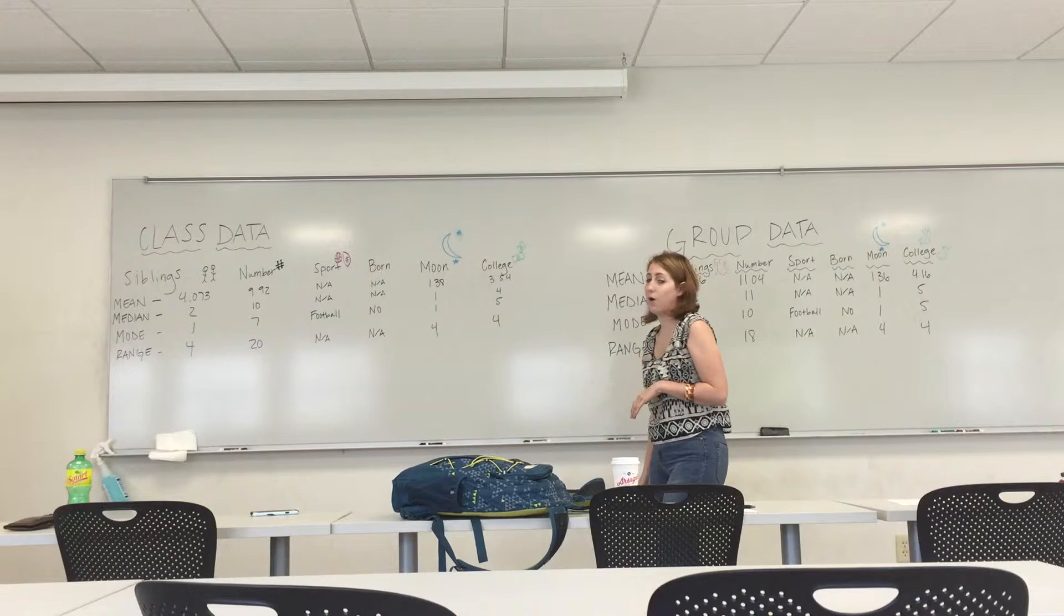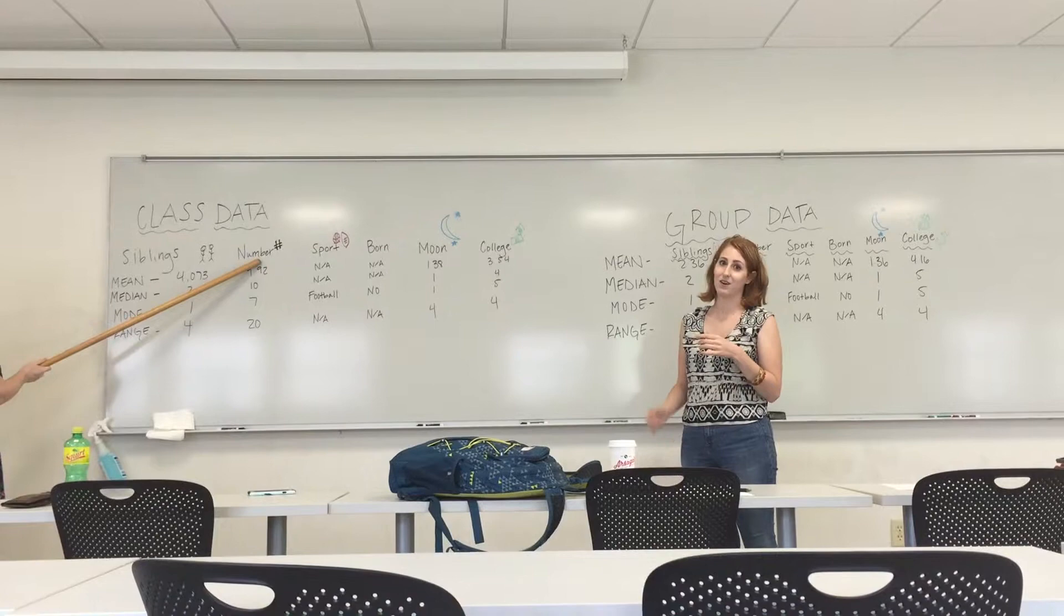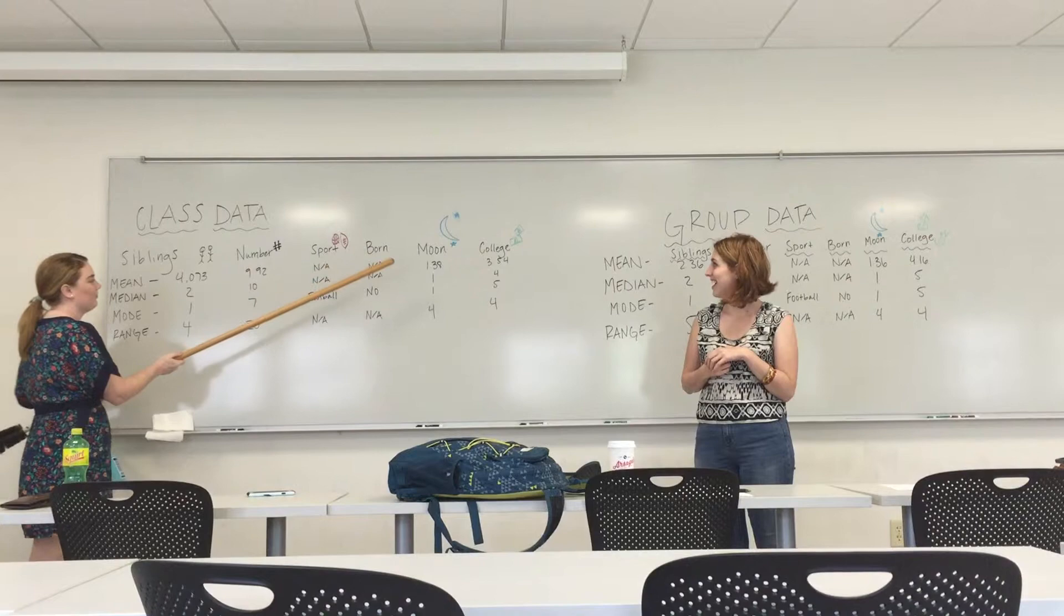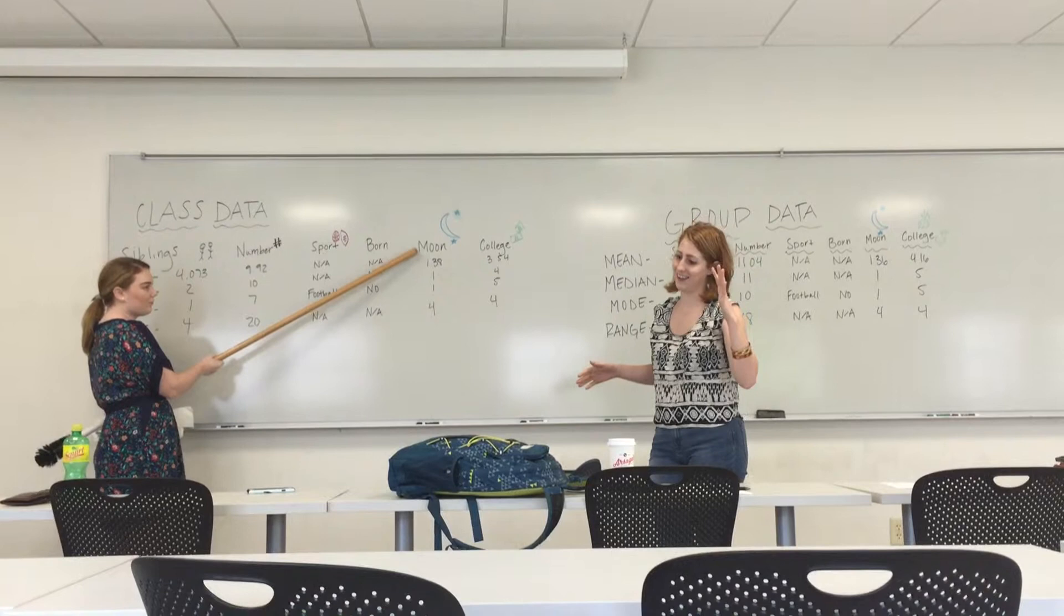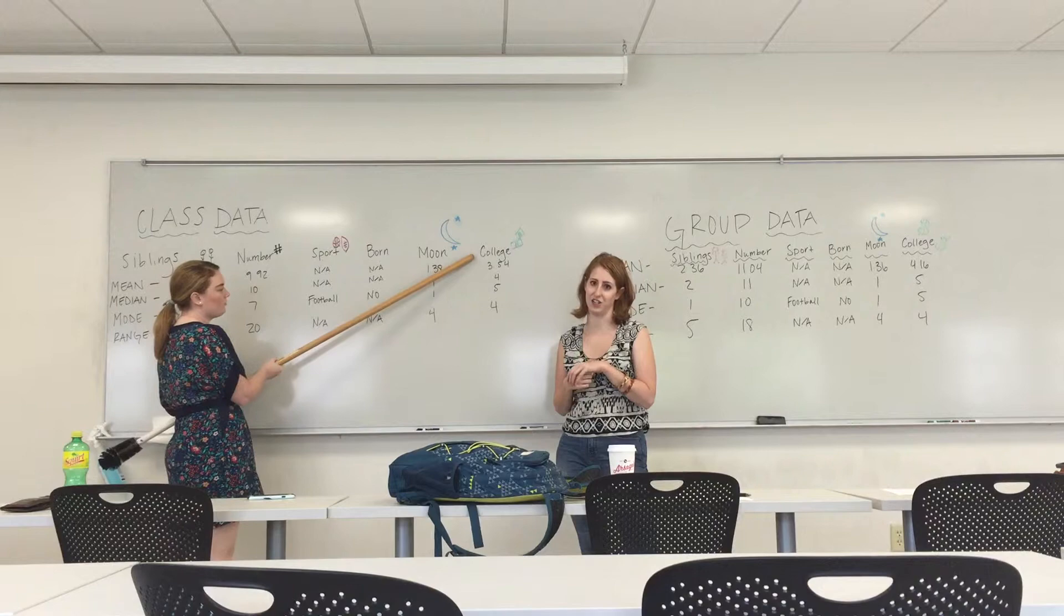Everybody in the class had to do this as well. So our six questions that we had to ask people were, how many siblings do you have? Pick a random number between zero and 20. What is your favorite sport? Were you born in Arkansas? And then the last two questions were scale questions. So the people we surveyed had to answer between one and five, one being strongly disagree and five being strongly agree. The two statements were, we never landed on the moon and college education should be free.